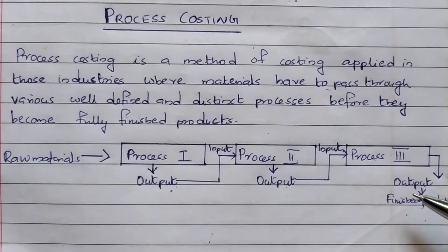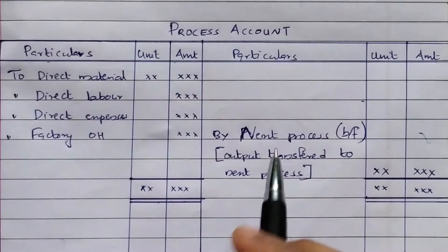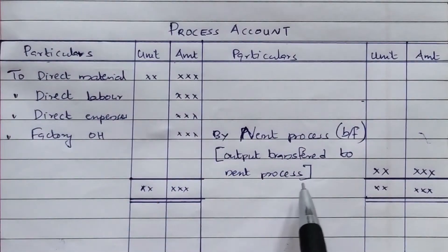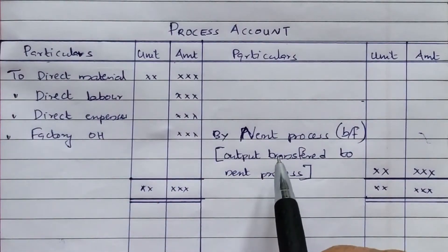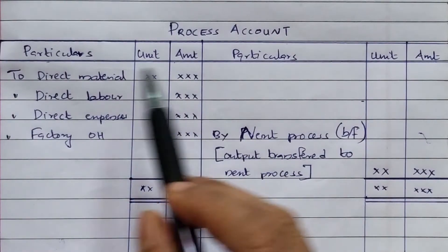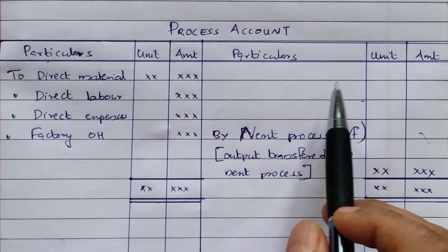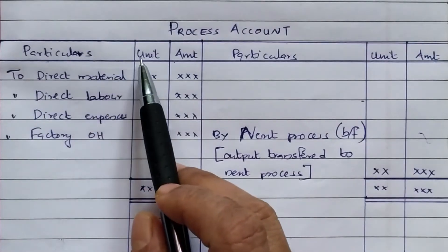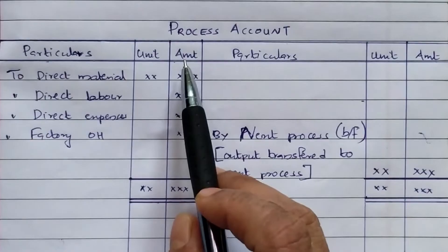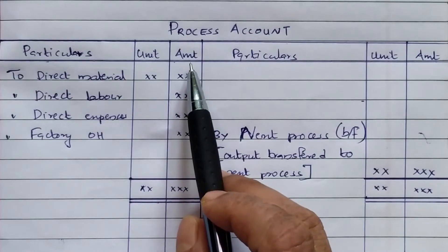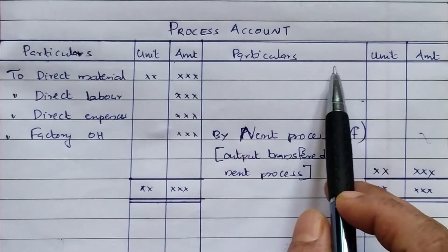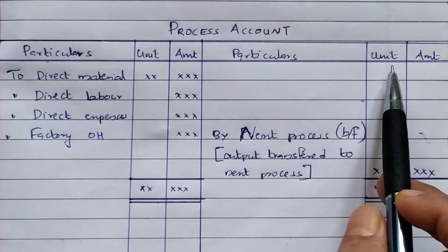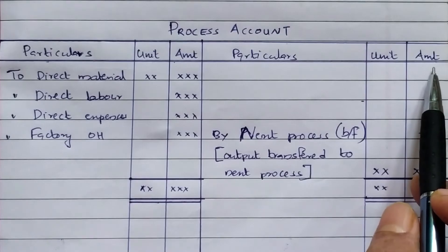Now we will look at the process account format. This is a simple process account format. The account has a debit side and a credit side. The debit side has columns for particulars, units, and amount. The credit side also has particulars, unit, and amount columns.